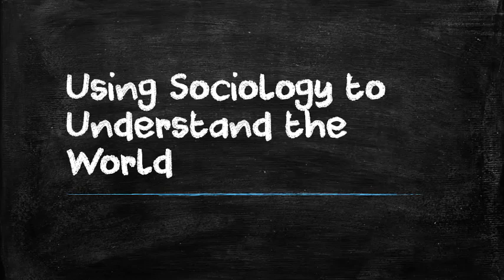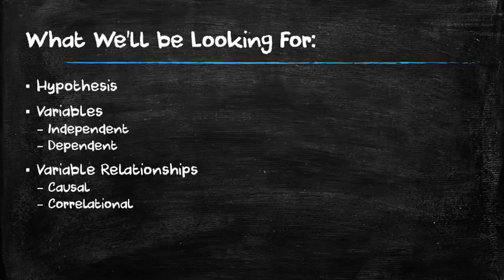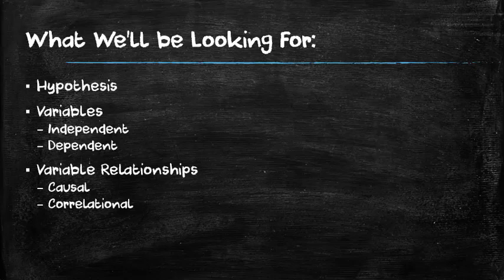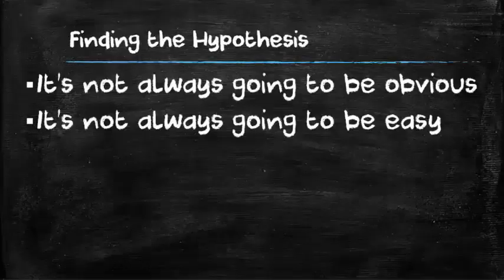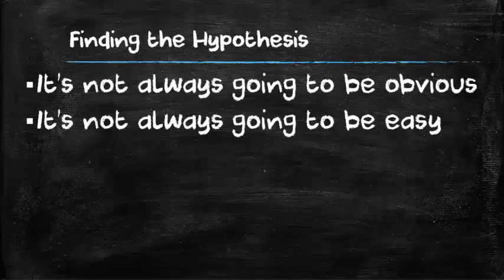In this particular lecture, we're going to talk about how to find a hypothesis in what you're reading. We're going to talk about variables and variable relationships, meaning the relationship between independent and dependent variables. So what we're going to concentrate on now is finding the hypothesis, and that's not always going to be an obvious thing to pick out from what you're reading, and it's not always going to be easy to find.